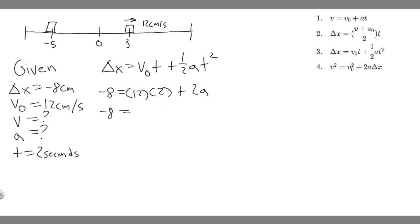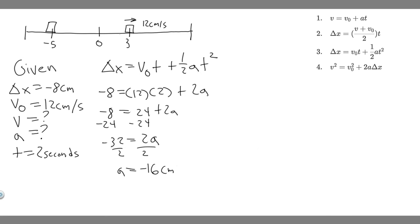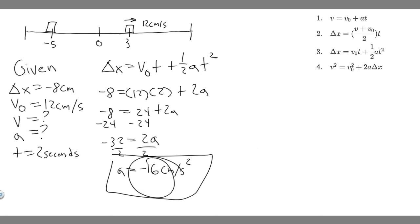Subtracting 24 from both sides: minus 8 minus 24 is minus 32, equals 2a. Dividing both sides by 2, we get a equals minus 16. The units are centimeters per second squared — centimeters for distance and seconds for time, so it's distance over time squared. The acceleration is minus 16 centimeters per second squared. Hopefully you found this useful.